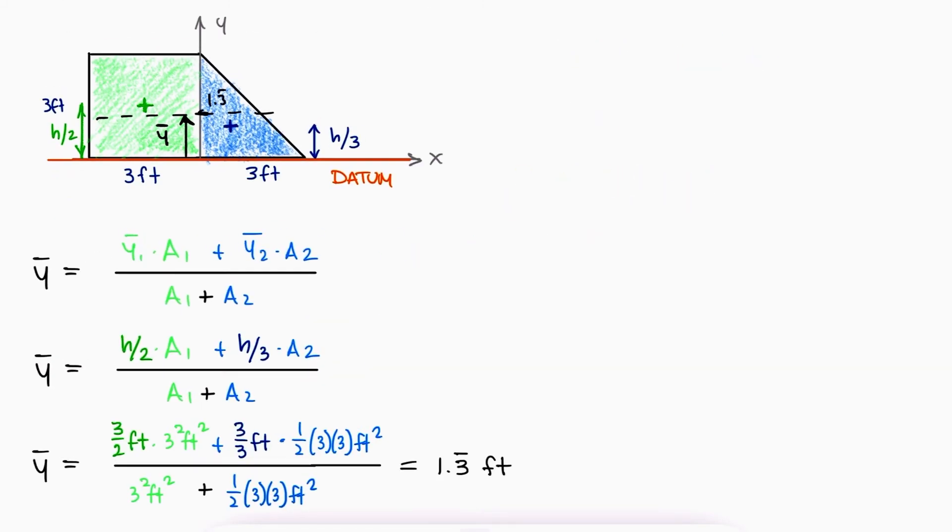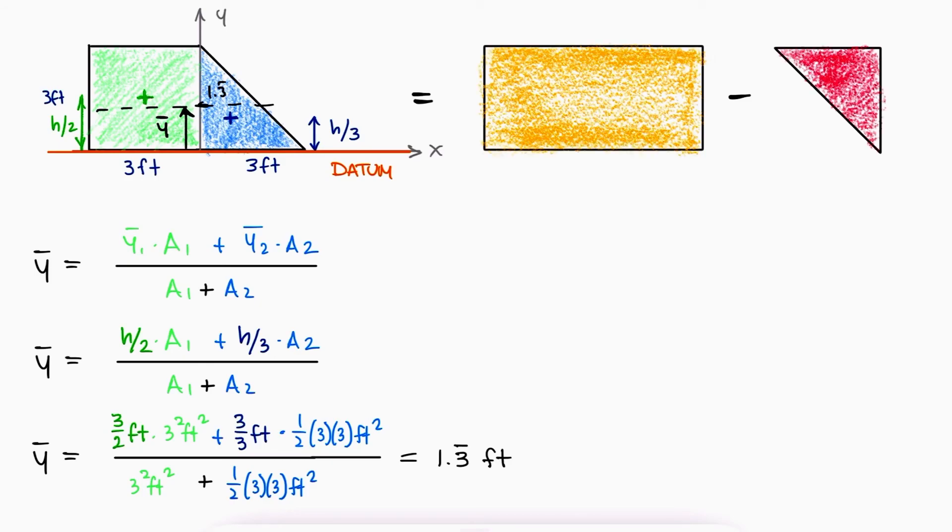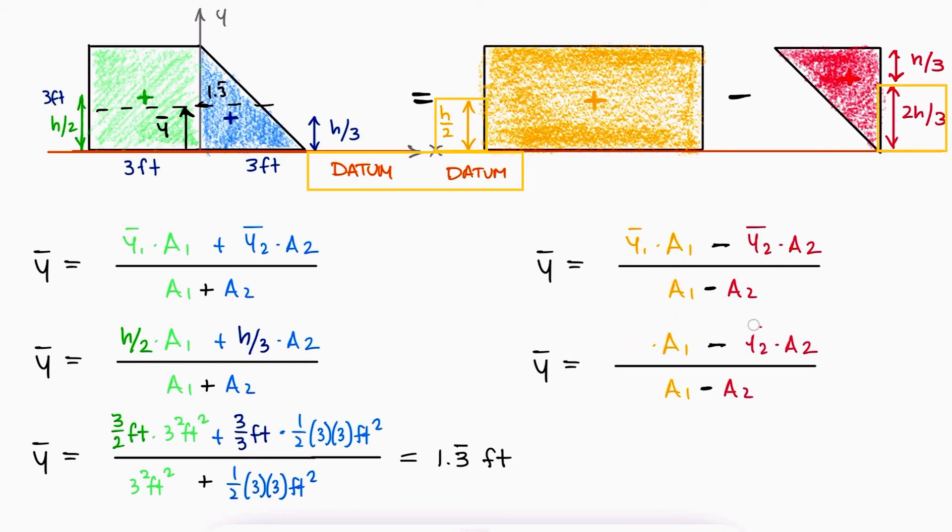Notice that the same shape can be obtained by subtracting a triangle from a larger rectangle. In this case, the sum expressions would of course include a negative sign for the triangle you're subtracting from the rectangle. The centroid of the rectangle is still at h over 2, and the centroid of the triangle is at h over 3 from the top, meaning 2h over 3 from the bottom, our datum. And of course, always remember to have the same frame of reference for all shapes.